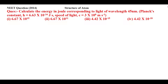This is NEET 2014's question. Calculate the energy in joules corresponding to light of wavelength 45 nanometers. Planck's constant h equals 6.63 × 10⁻³⁴ joule·second, and speed of light c equals 3 × 10⁸ meter per second. We have four options and we need to calculate the energy in joules for light of wavelength 45 nanometers.